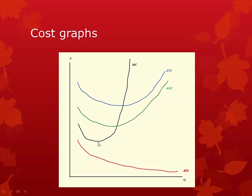Right here, marginal cost bottoms out, but average variable cost and average total cost are still decreasing. As marginal cost starts increasing, average variable cost and average total cost still decrease, because marginal cost is still less than both of them. Right here, marginal cost intersects average variable cost. At this point, the cost of producing an additional good is the same as the overall cost of producing all goods combined. As marginal cost increases, average variable cost will keep increasing. However, at this point, average total cost is still decreasing, because average fixed cost is still decreasing, and average total cost is the sum of both.